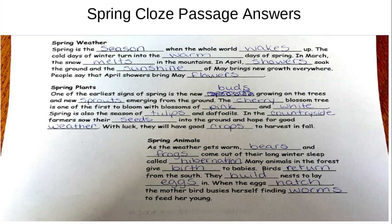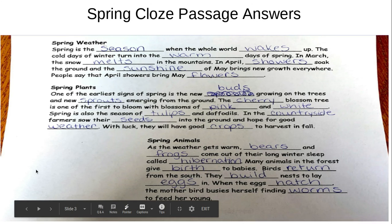Spring animals. As the weather gets warm, bears and frogs come out of their long winter sleep, called hibernation. Many animals in the forest give birth to babies. Birds return from the south. They build nests to lay eggs in. When the eggs hatch, the mother bird busies herself finding worms to feed her young.